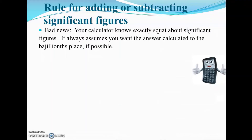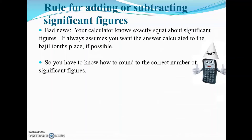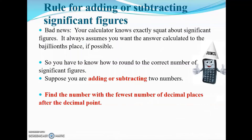The bad news is that your calculator knows absolutely nothing about significant figures. It always assumes you want to carry it out to — as I put on the slide — the bajillionth place. Your calculator is not smart when it comes to significant figures, so you have to know how to round. For addition and subtraction, all you have to do is find the number with the fewest number of decimal places after the decimal point, then round your answer to that.